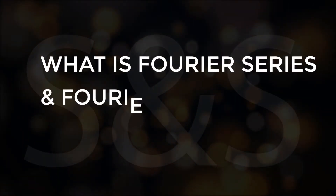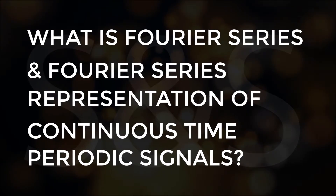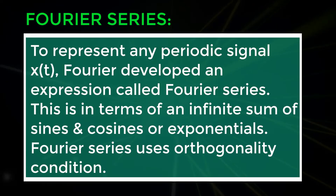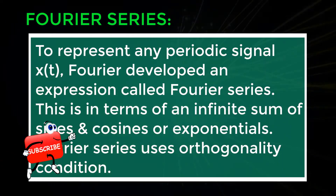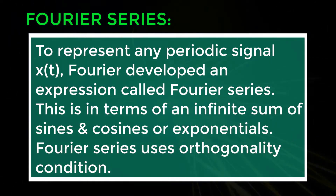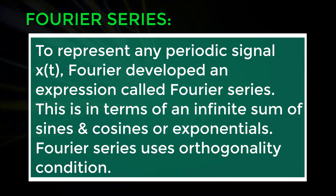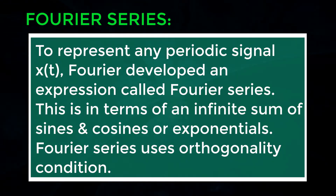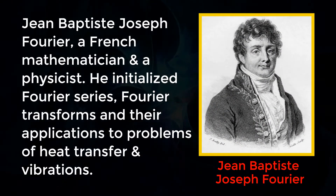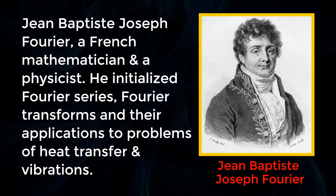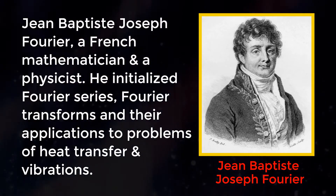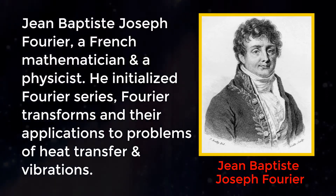What is Fourier series and Fourier series representation of continuous time periodic signals? Fourier series is used to represent any periodic signal X of T. Fourier developed an expression called Fourier series, in terms of an infinite sum of sines and cosines or exponentials, using the orthogonality condition. John Baptiste Joseph Fourier, a French mathematician and physicist, initialized Fourier series, Fourier transforms, and their applications to problems of heat transfer and vibrations.